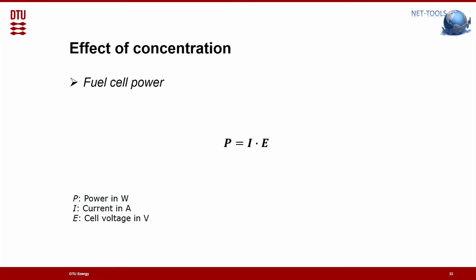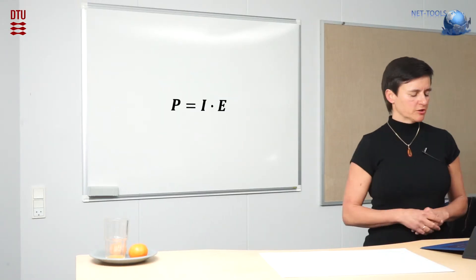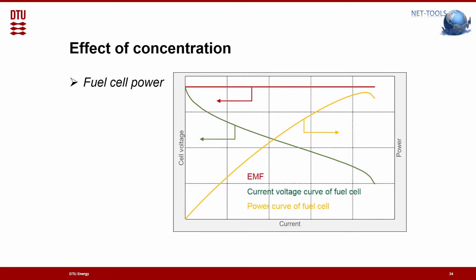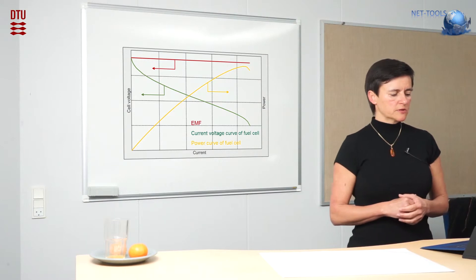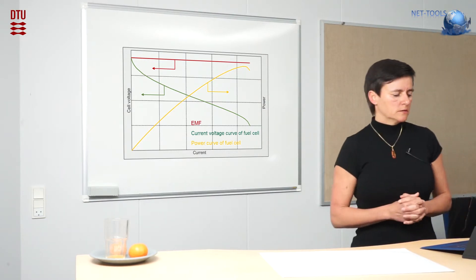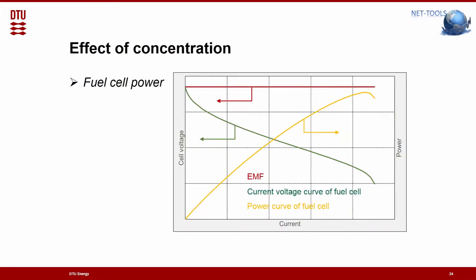First, very basic equation: the power is the current times voltage. If I now plot the cell voltage versus the current and the power versus the current, you see these three lines. The red line is the electromotive force, the theoretic cell voltage, which you only have when you don't operate the fuel cell. As soon as you operate the fuel cell, you come to the green curve. The cell voltage is decreasing with increasing current. And of course, correlated through the equation I showed before, the power is increasing and going through a maximum with increasing current.